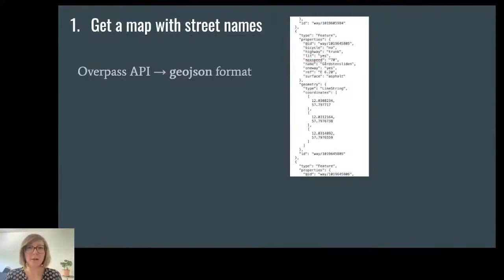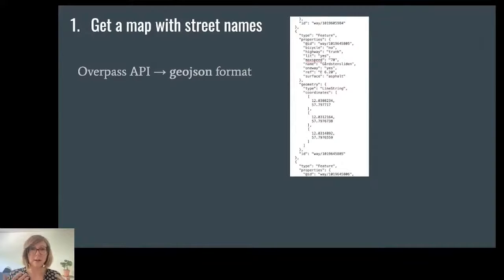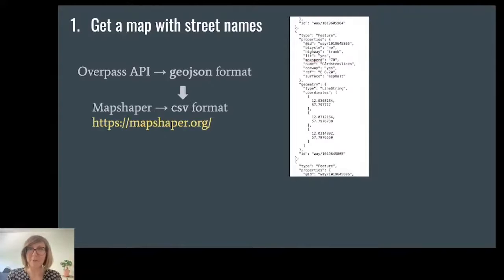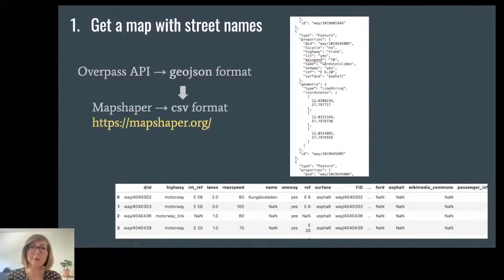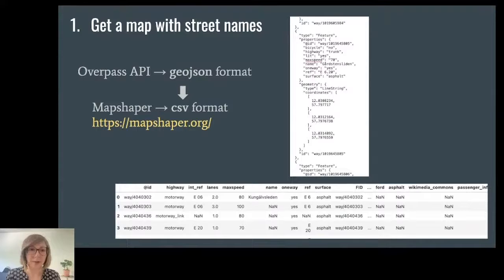Overpass gives you the data in GeoJSON format, which includes both data about the streets — such as names and type of street — as well as the geographic information, meaning coordinates. I wanted the data in CSV format, in a table shape, because it's easier to look through in something like Excel or Google Sheets. That conversion from GeoJSON to CSV is very easily done with MapShaper.